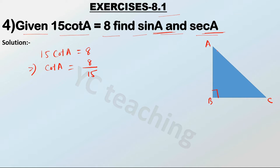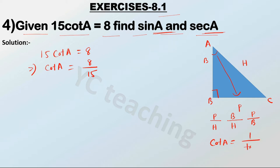For angle A, the opposite side is the perpendicular, the adjacent side is the base, and this is our hypotenuse. We know sin A is equal to perpendicular by hypotenuse, cos A is equal to base by hypotenuse, tan A is equal to perpendicular by base. And cot A is equal to 1 by tan A.